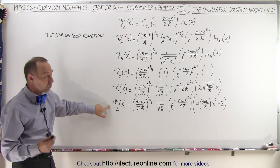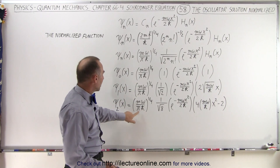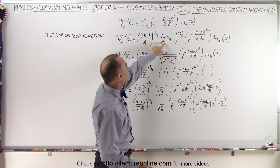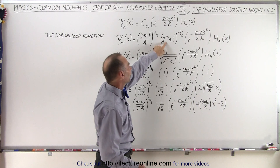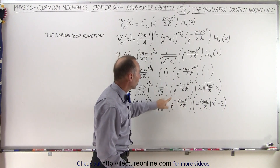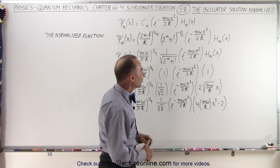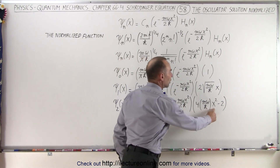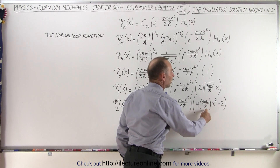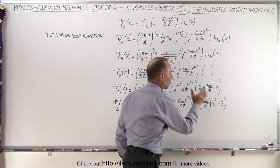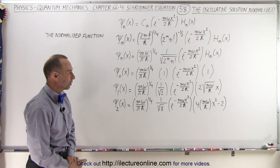For the second quantum state, the normalization portion stays the same. Now with n equals 2, we have 2 to the second power, which is 4, and 2 factorial is 2, so 2 times 4 is 8 — giving 1 over the square root of 8. We still have the exponential function, and the next Hermitian operator is 4x squared minus 2. Before the x squared we still have m omega over h-bar, so we get 4m omega over h-bar times x squared minus 2 for the Hermitian operator.